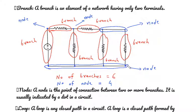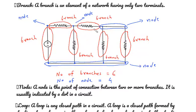This one, two, three, four. Four branches combine to make one node. So there are one, two, three and four. Four number of nodes in this circuit.